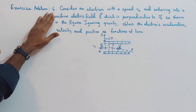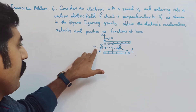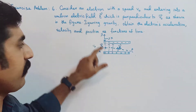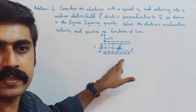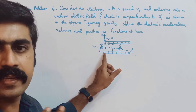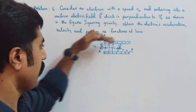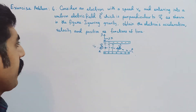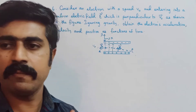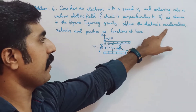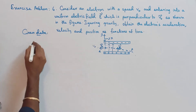Exercise problem 6: Consider an electron with a speed V0 entering into a uniform electric field. It is a uniform electric field because one plate is fully negative and the other has an equal number of positive charges — both are parallel, like a capacitor. The electron travels in the space between the plates. The electric field is uniform. Ignore gravitational force and consider it to be negligible.